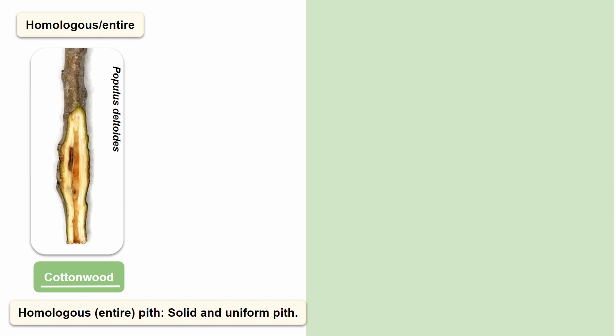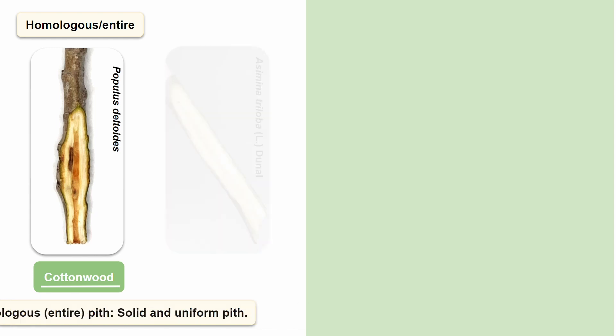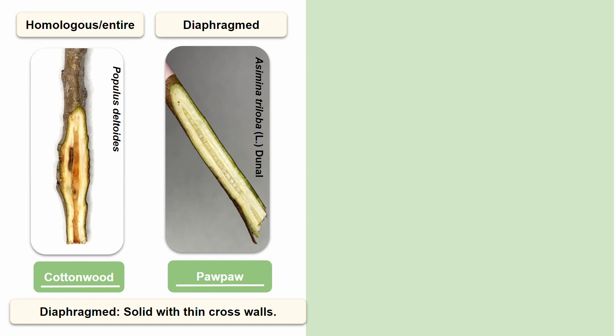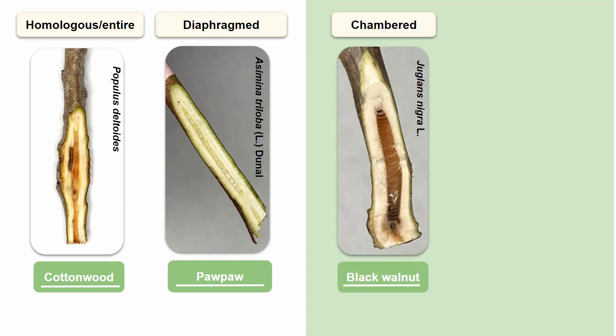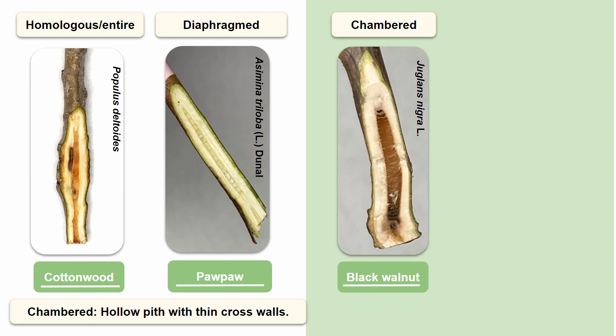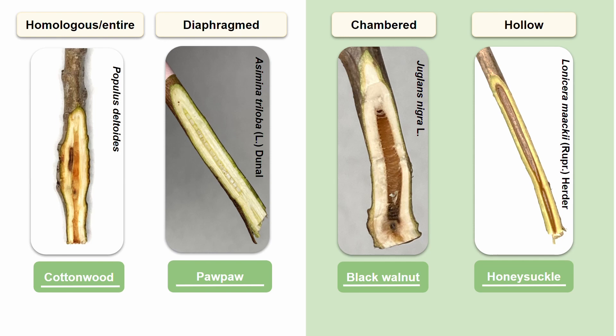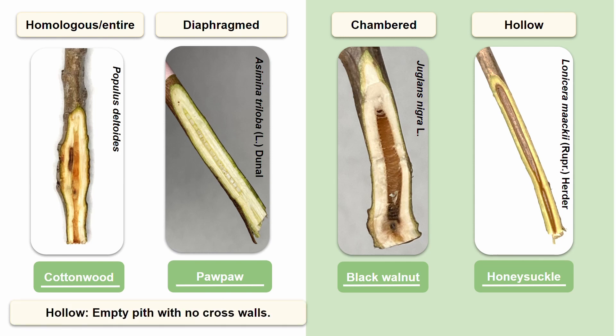Additionally, there are four different types of pith that are found in twigs. The first is a homologous, otherwise known as an entire pith, that is solid and uniform. Cottonwoods have homologous piths. The next type of pith is diaphragm, which is when the pith is solid but has thin crossed walls inside of it — this type of pith can be found in pawpaw twigs. We also have a chambered pith, which is hollow but has thin crossed walls, and this can be found in black walnut twigs. Lastly, we have hollow piths, which are empty with no thin cross walls. Honeysuckles have hollow piths.